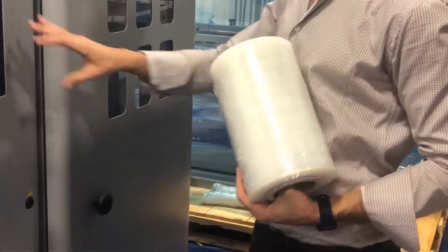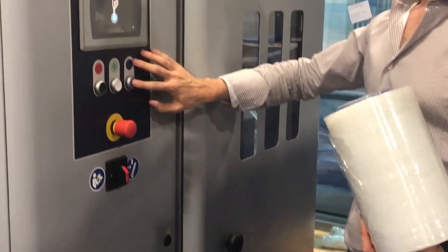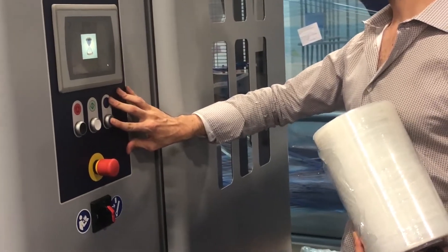We have a 10-inch film for the Spyro 600. Here on the screen, we want to reset the machine.